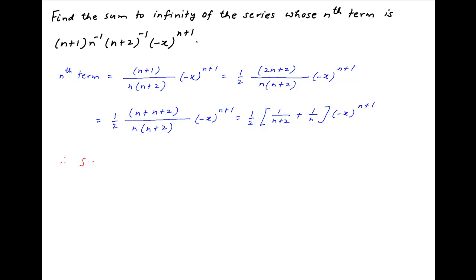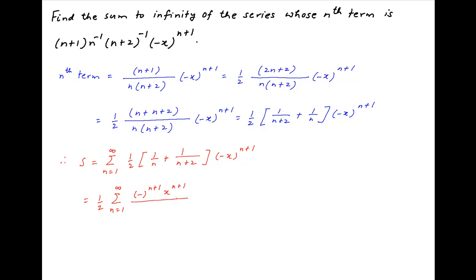Therefore the sum to infinity, let's denote it by S, is equal to summation n equals 1 to infinity of half of, in brackets, 1 upon n plus 1 upon n plus 2, multiplied by minus x raised to the power n plus 1. This is equal to half of summation n equals 1 to infinity of minus raised to the power n plus 1 times x raised to the power n plus 1 upon n, plus half of summation n equals 1 to infinity of minus raised to the power n plus 1 times x raised to the power n plus 1 upon n plus 2.